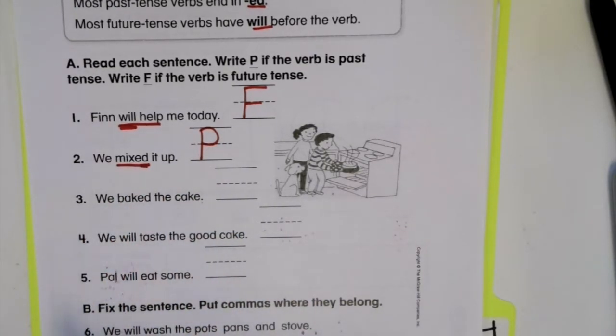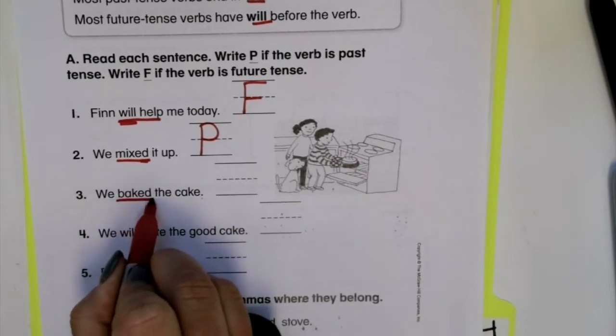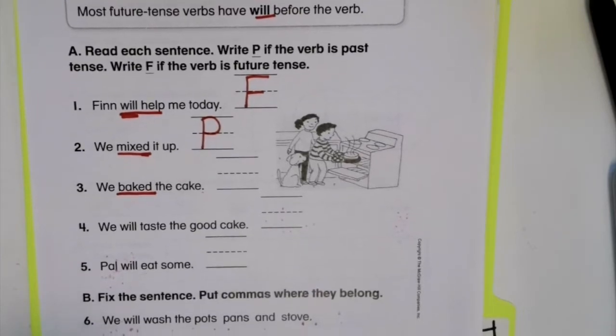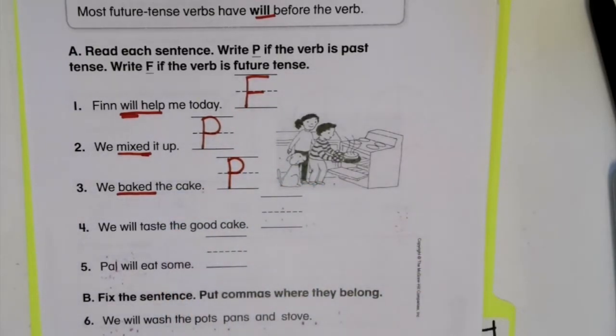Three, we baked the cake. What was the sentence talking about? We. What about we? We baked. That's our verb. Baked. I notice it has an ed ending first grade. Does that help us? It should. Hopefully you put a P in for number three.